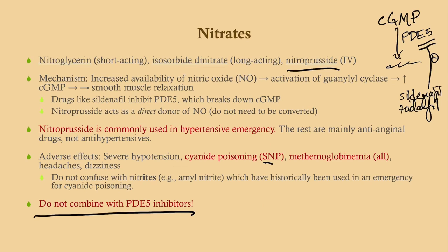Methemoglobinemia is an adverse effect of all nitrates. Headaches and dizziness are also common. Why headaches? Because you cause vasodilation, and vasodilation causes headaches. Caffeine is useful for treating headaches because it's a vasoconstrictor. Migraines similarly involve vasospasm — if we constrict those vessels we can abort the migraine. So anything that dilates vessels can trigger a migraine, even in a person who doesn't ordinarily get them.